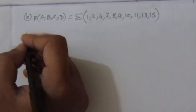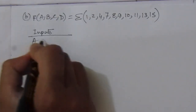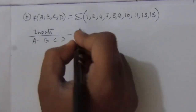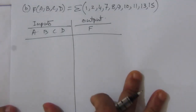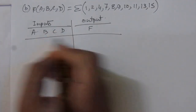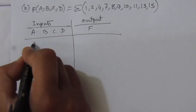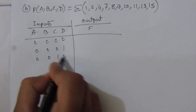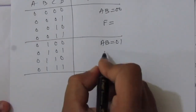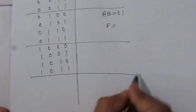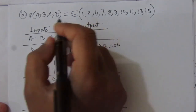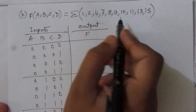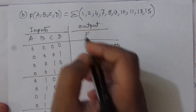Now, similar to the previous case, we have to make the truth table. Inputs are A, B, C, D and the output is F. Similar to the previous case, we have to write the input combinations.